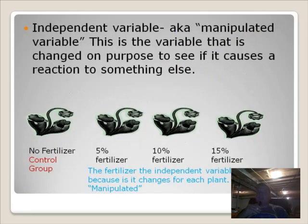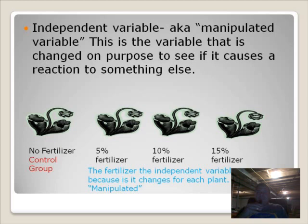Another part of an experiment is called the independent variable, also known as the manipulated variable, depending on what kind of textbook you're reading. This is the variable that is changed on purpose to see if it causes a reaction in something else. This is what you're in control of as an experimenter. In our case, the fertilizer is the independent variable. We are changing on purpose the amount of fertilizer each plant is getting, and that is the only thing that's changing.